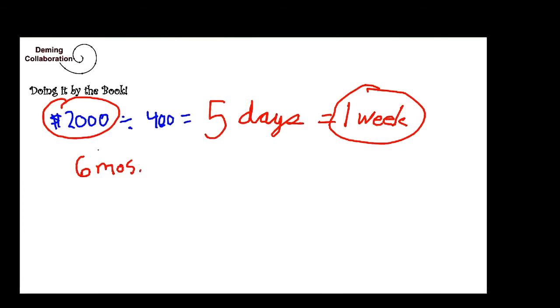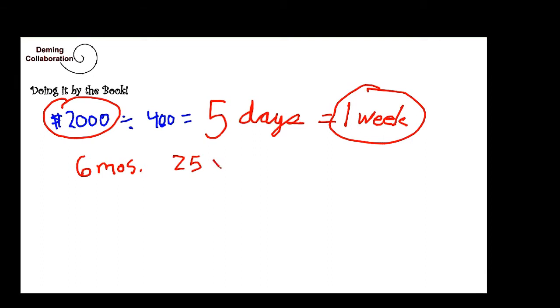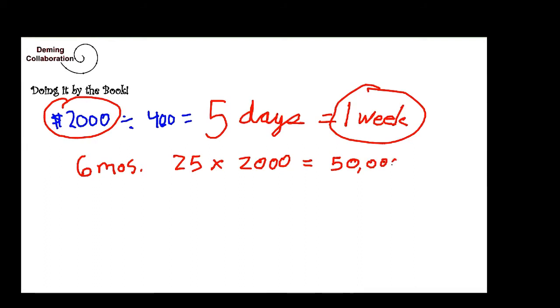That means that after one week, the savings is gone. But for another 25 weeks, six months minus one week, which is paid for by the savings, the company is losing $2,000 a week, or in a six month period, $50,000.